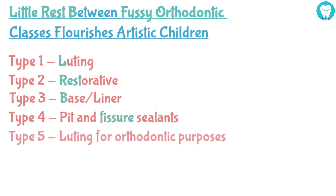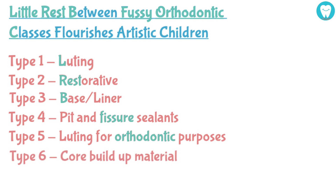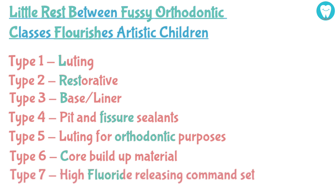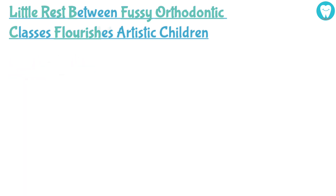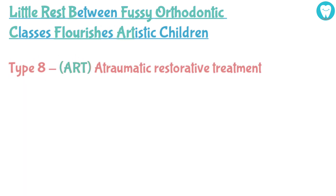'Orthodontic' stands for Type 5, Luting for Orthodontic purposes. 'Classes' — the C stands for Type 6, Core Buildup Material. 'Flourishes' stands for Fluoride, that is Type 7, High Fluoride Releasing.